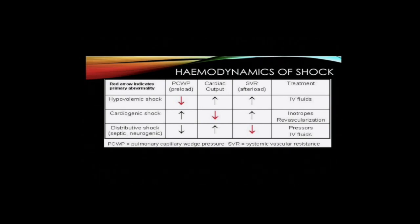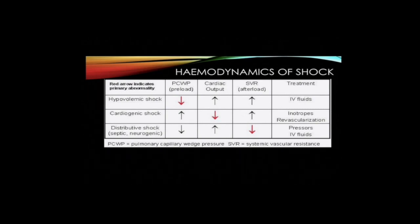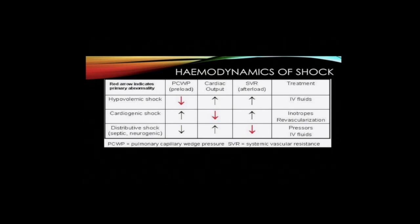This forms the basis of categorization of shock. Shock can be classified into three categories based on etiology. Hypovolemia is the most common cause of shock. Inadequate circulating volume results from blood loss, fluid loss, or third space sequestration. There is reduced preload, increased cardiac output, and increased afterload. Treatment is with volume replacement.